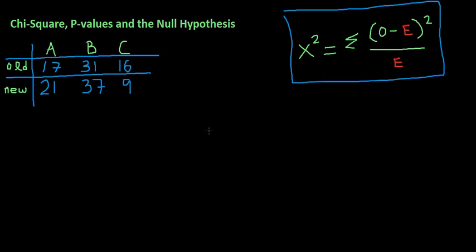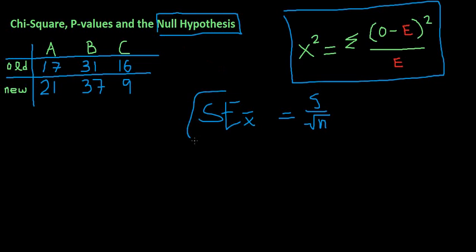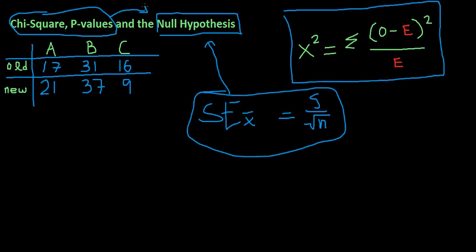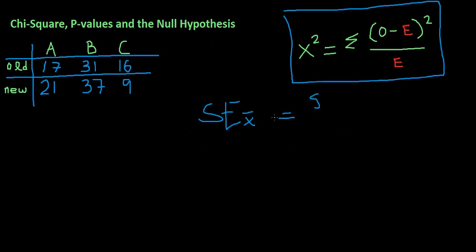This is really different from the standard error of the mean thing that we talked about in the other video where you divide standard deviation by the number of observations. Totally different test, but for the same purpose of figuring out what to do with the null hypothesis. So this is one method, your standard error of the mean method. Then you have the chi-square value with the p-value test to also determine what to do with the null hypothesis.